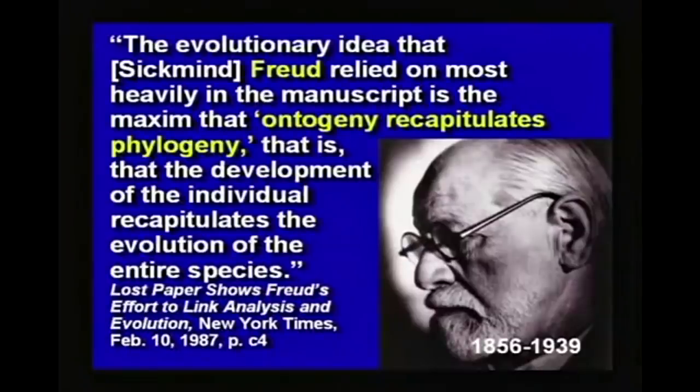For Haeckel, that point was in specifying that the embryo recapitulates the adult forms of its phylogeny. If he hadn't specified that it would become a fish and an amphibian and a reptile before becoming a mammal, then we might still be teaching his poetic phrase — which no one currently teaches, by the way. At this point in the series, would it be surprising to anyone that the preacher got everything wrong again? Now, the idea that Freud relied on was the idea that ontogeny recapitulates phylogeny — that is, the development of the individual recapitulates the evolution of the entire species. In what way did Sigmund Freud rely on Haeckel's biogenetic law? What could that possibly have to do with psychiatry?